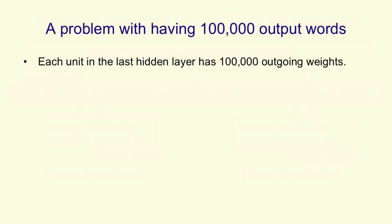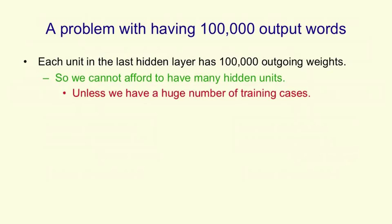So each unit in the last hidden layer of the net might have to have 100,000 outgoing weights. And that means we can only afford to have a few units there before we start overfitting. That's not necessarily true. We might have a huge number of training cases. So some organization like Google might have so much training data that it can afford to have a very big softmax layer.